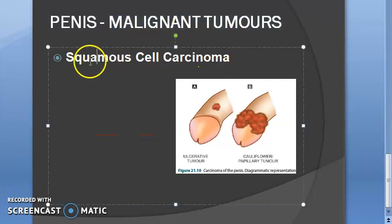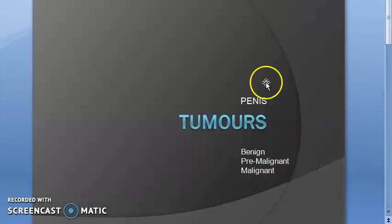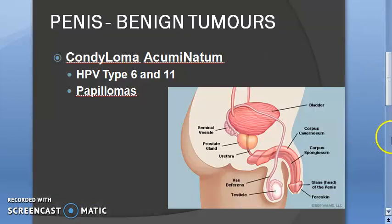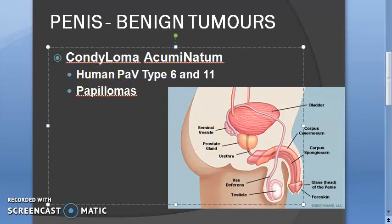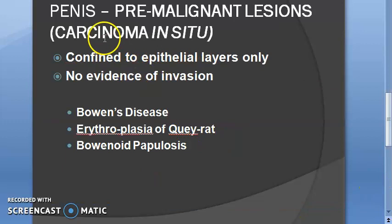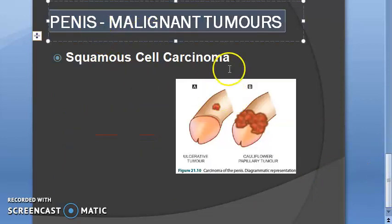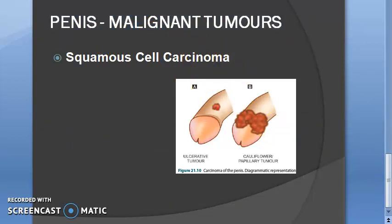Moving on to malignant tumors, you have squamous cell carcinoma. To recap what we have studied so far: under benign, condyloma acuminatum caused by HPV types 6 and 11, forming papillomas; under pre-malignant, Bowen's disease, bowenoid papillosis, and erythroplasia of Queyrat; and under malignant, squamous cell carcinoma.